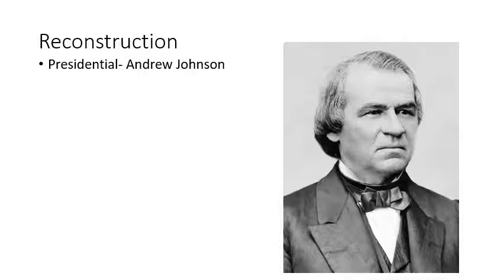Other Republicans wanted a much more strict way of handling the former Confederate states. We see these more strict Republicans passing the Wade-Davis Bill, which would have required a majority of the state's pre-war voters to pledge loyalty and would have demanded that states guarantee Black equality before the law. Lincoln actually stopped this from becoming law by using what is known as a pocket veto — he basically refused to sign it.